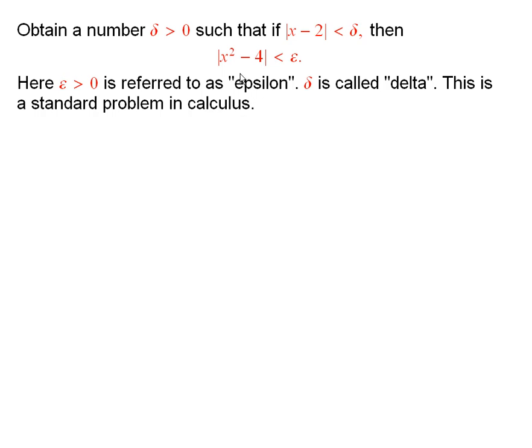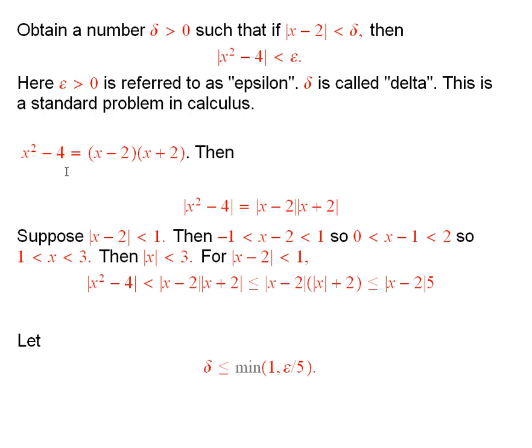Now to do this problem, I need to first understand x squared minus 4. Observe that x squared minus 4 is equal to this product, and so the absolute value of x squared minus 4 is equal to the product of the absolute values.